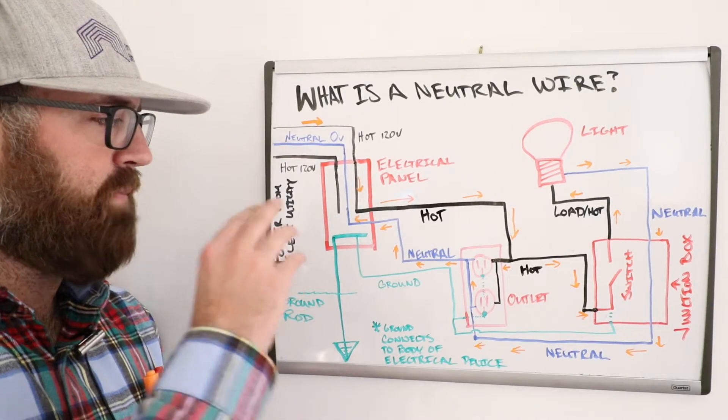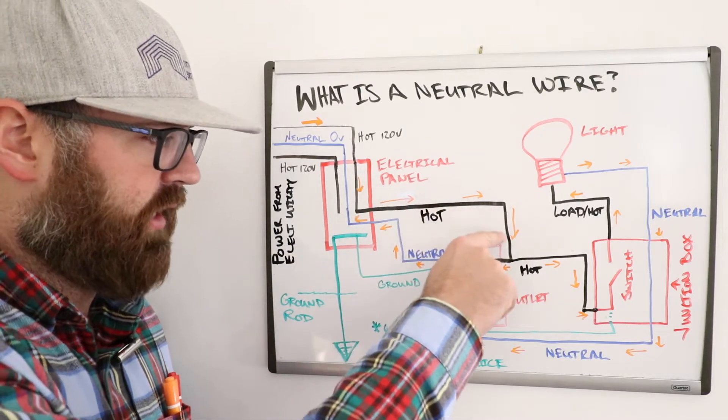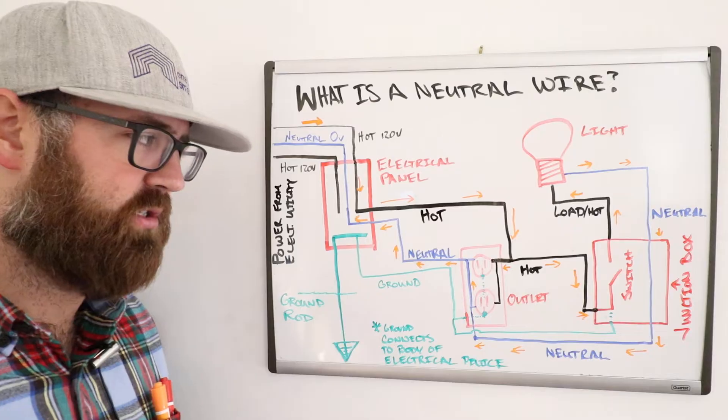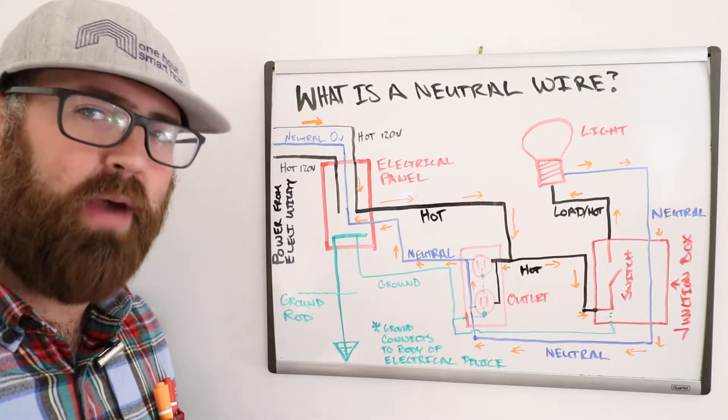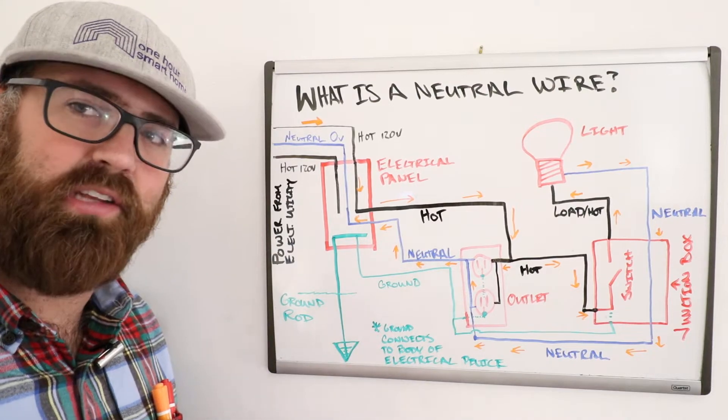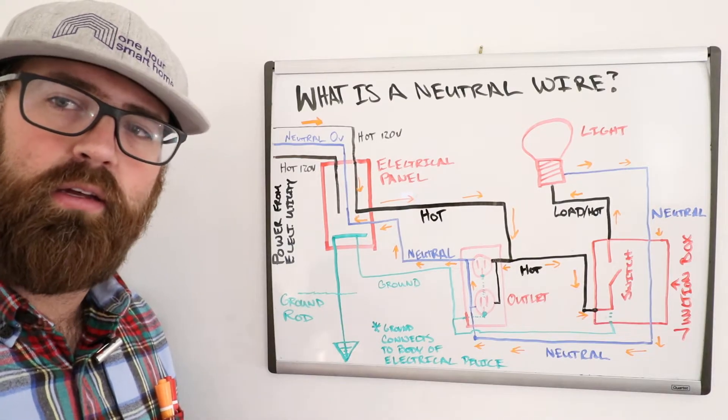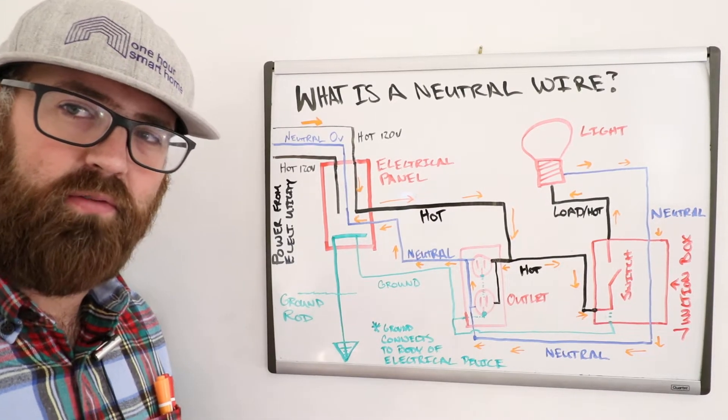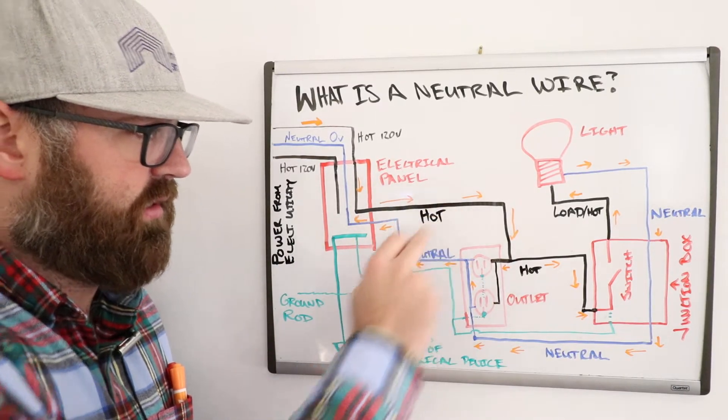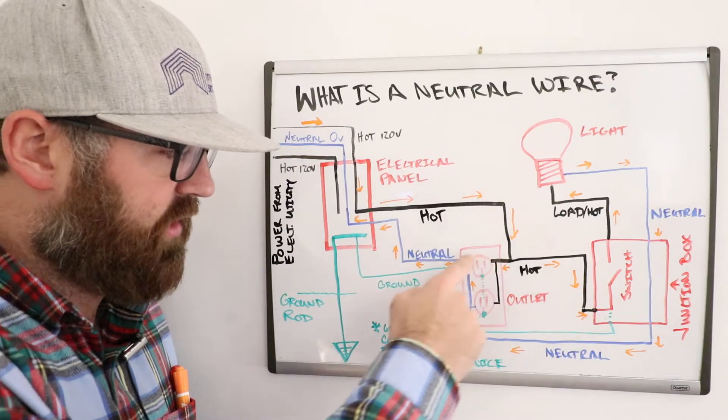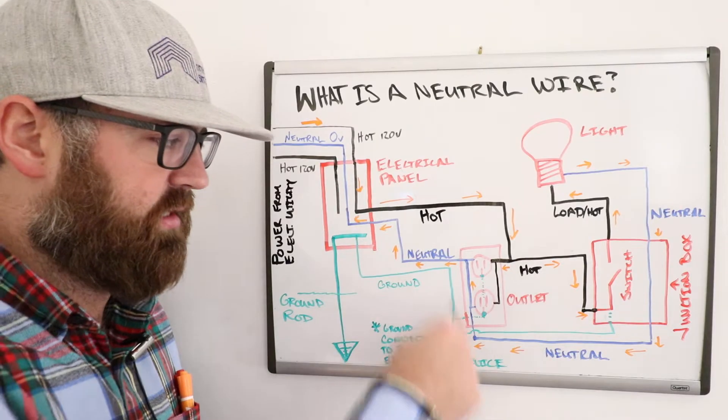Once the power or the voltage gets to the electrical panel, you just keep following this hot wire. Hot is the terminology used for the wire that has live 120 volts on it or live power on it. It doesn't have to be 120 volts, but in the context of a home, most homes are 120 volts. Here in America, other countries you may have other voltages. You follow this path, hot wire, the electrical current designated in the orange is flowing down here.